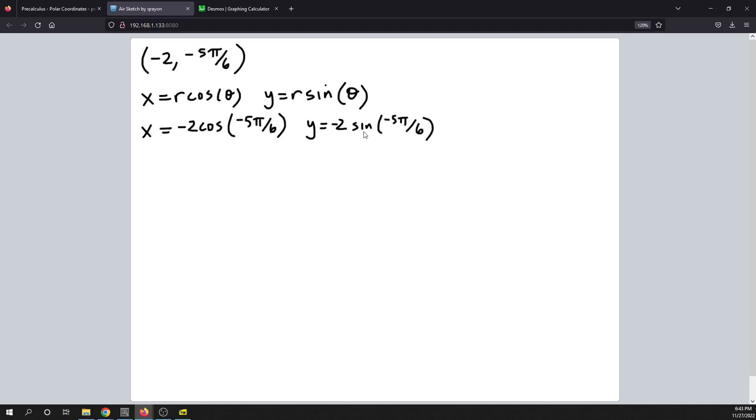All right, next up we will calculate what the values for cosine negative 5 pi over 6 and sine of negative 5 pi over 6. All right, and so if you don't remember what those are, you can use the unit circle to do that. But the cosine of negative 5 pi over 6 is minus square root 3 over 2.